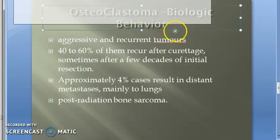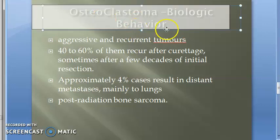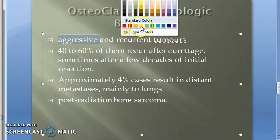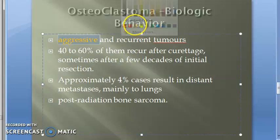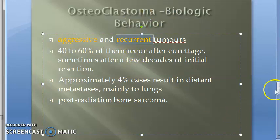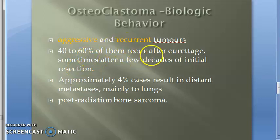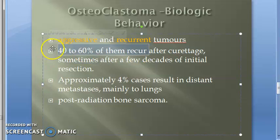Moving on to the biologic behavior of osteoclastoma: these tumors are aggressive and highly recurrent. Even after they have been removed, they will come back. 40 to 60 percent of the time they will reoccur after the initial resection.